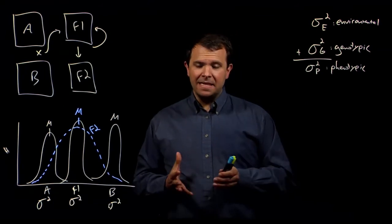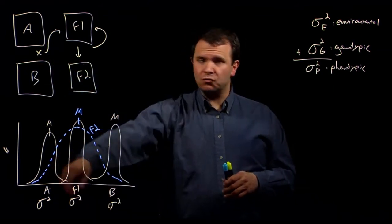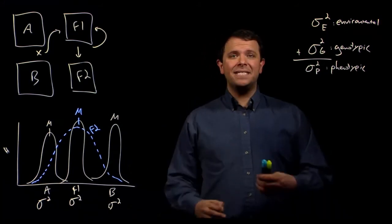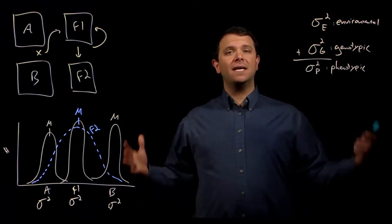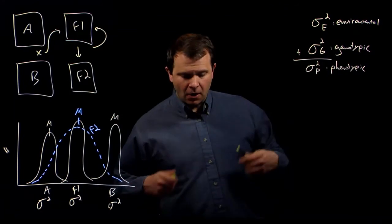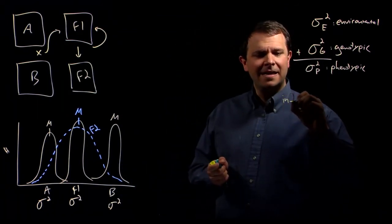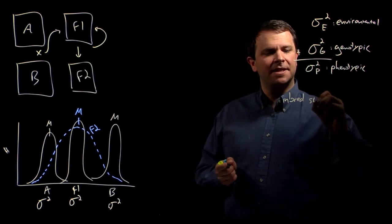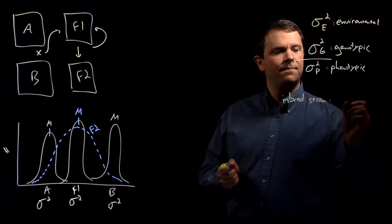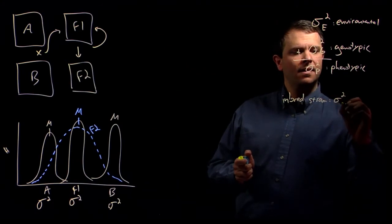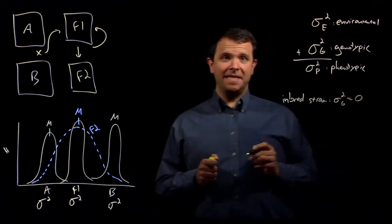But if we're measuring an inbred strain where there is no genotypic variance, because all of those individuals are genetically identical, then in the case of an inbred strain, our genotypic variance is zero.